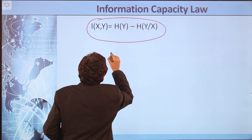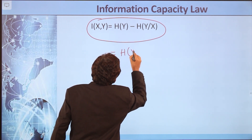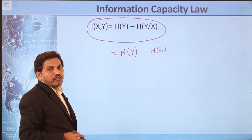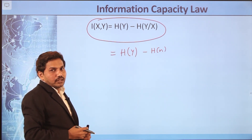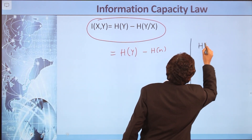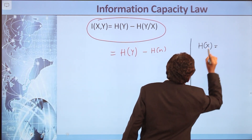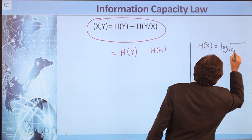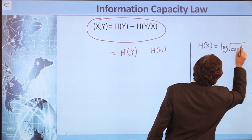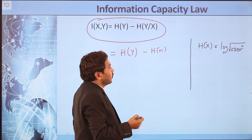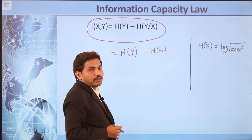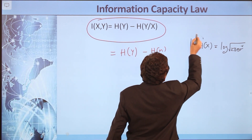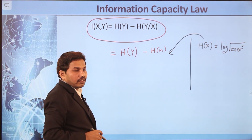Since the signal and noise are independent, h(y|x) = h(n). So the mutual information becomes I(x; y) = h(y) − h(n). Recalling equation 1, h(x) = log√(2πeσ²), we use this to simplify further. The average power of the received signal y is S + N, where S is the average power of the signal and N is the average power of the noise.